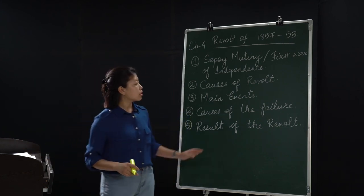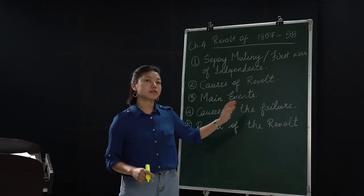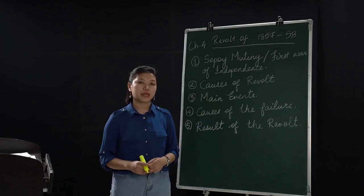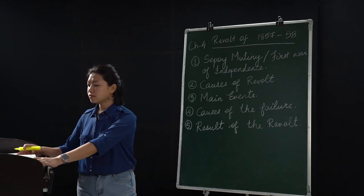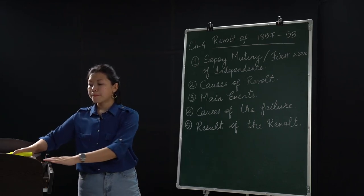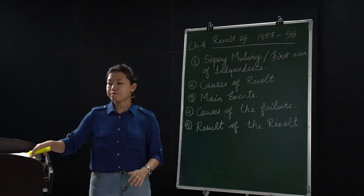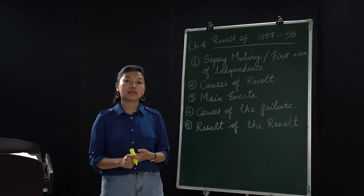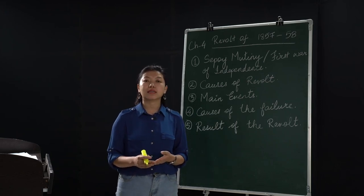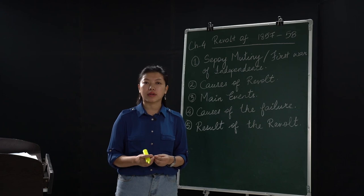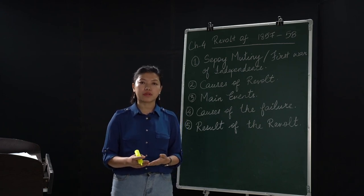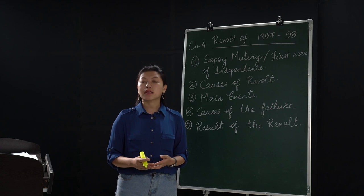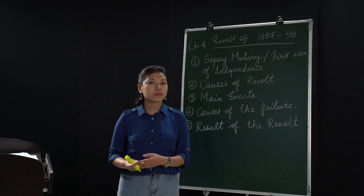Now, coming to the causes of the failure. Certain causes led to the failure of the revolt of 1857–58. One of the main reasons was that the middle class never supported the rebels — whoever was taking part in the revolt, the middle class never supported them.